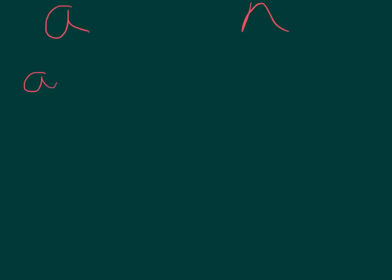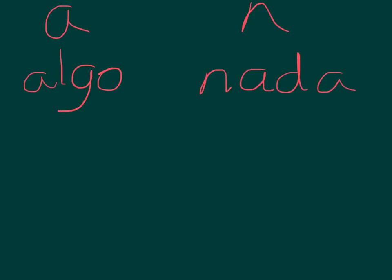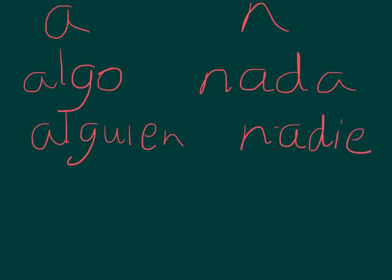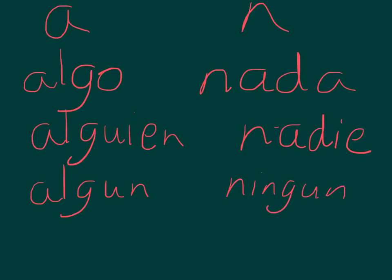So we got algo, which means something. Nada means nothing. Algún means someone. Nadie means no one. Then you've got algún, which means some. And ningún, which means none.